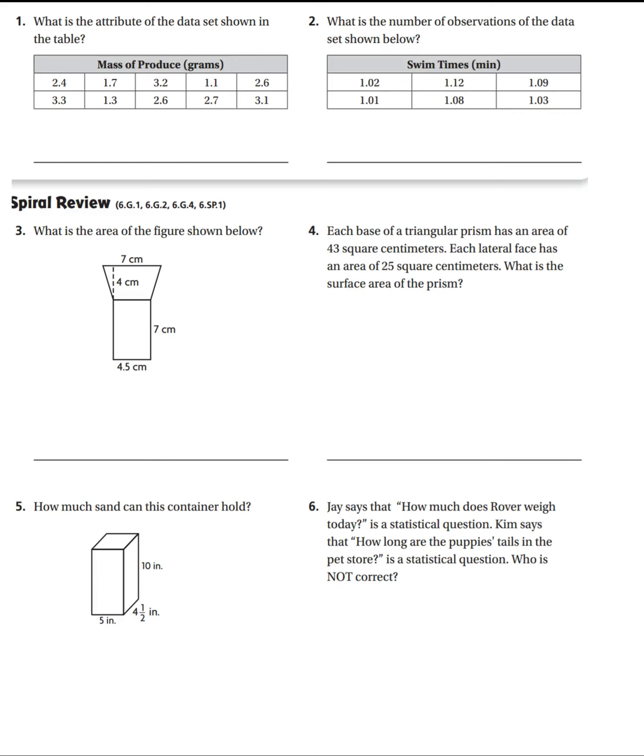All right, now we're on the back side of the homework, P204. What is the attribute of the data set shown in the table? There, what attribute? Attribute is here. What is the number of observations in the data set? Count the number of data points they have.